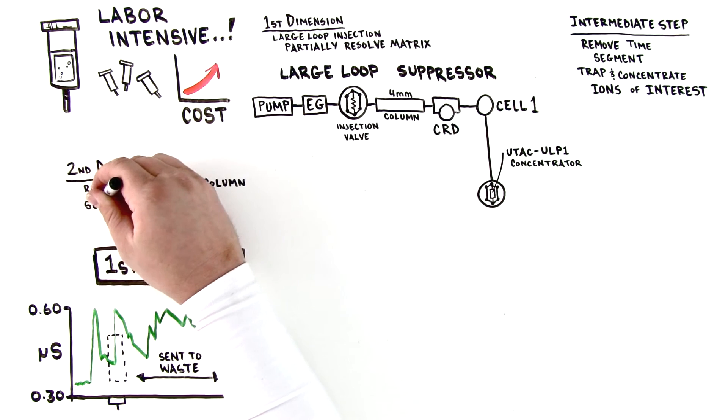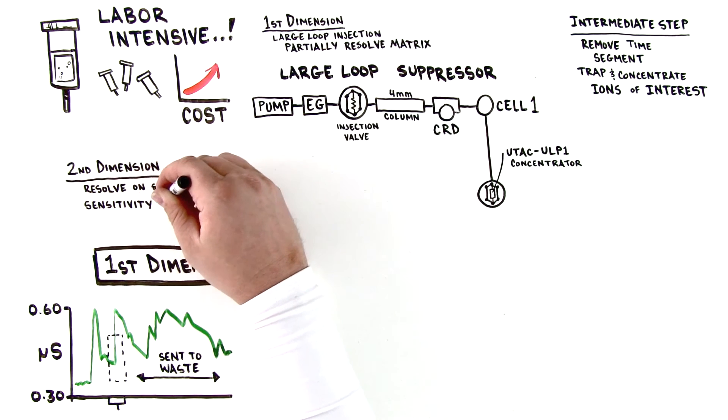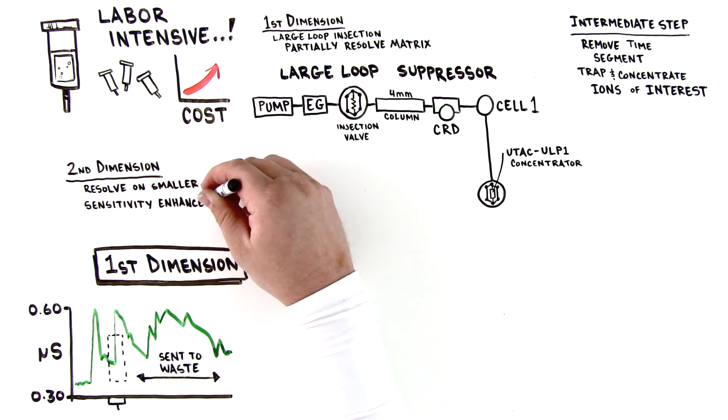Fourth, the second dimension column enhances sensitivity with a smaller cross-sectional area relative to the first dimension.